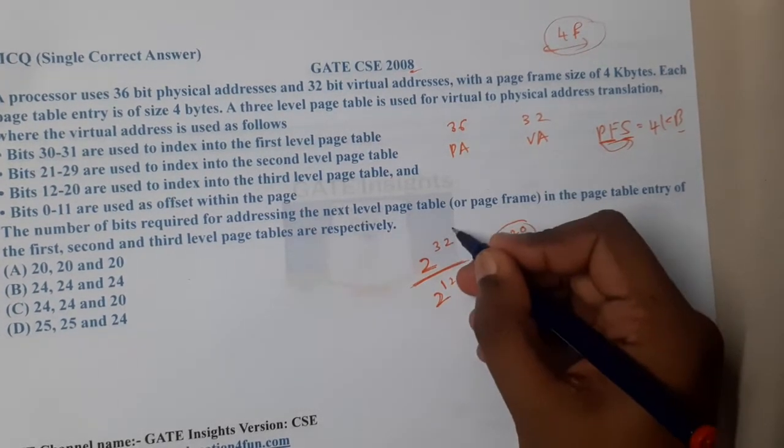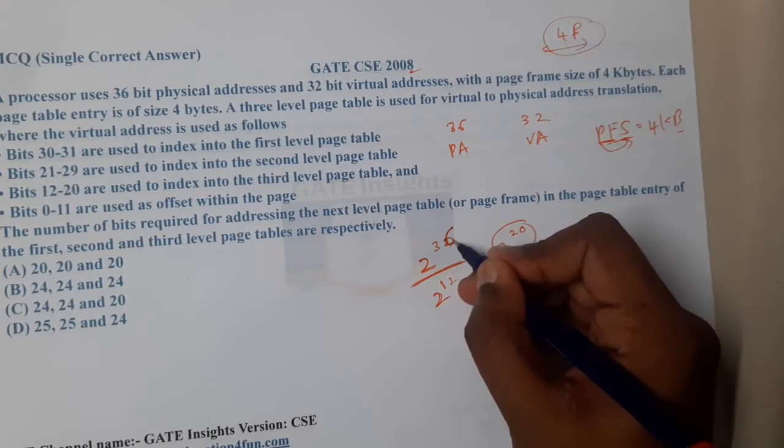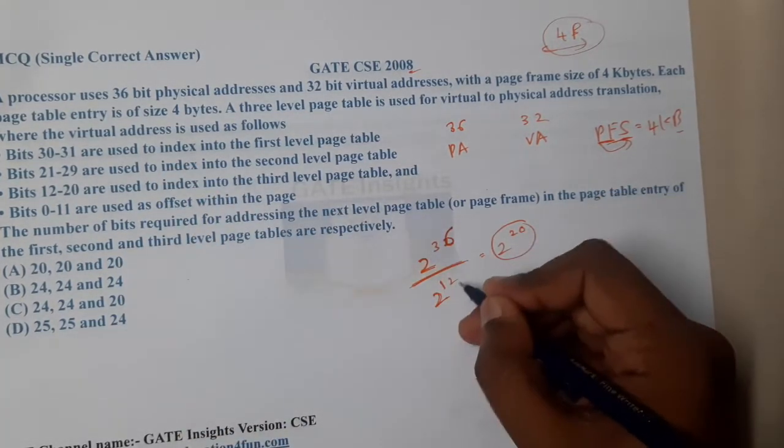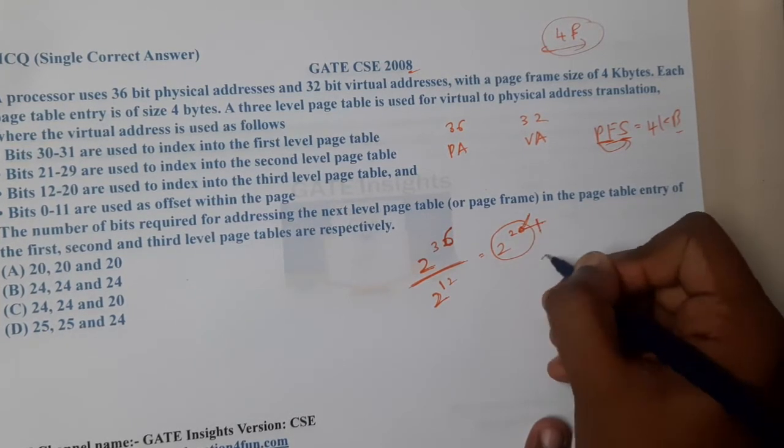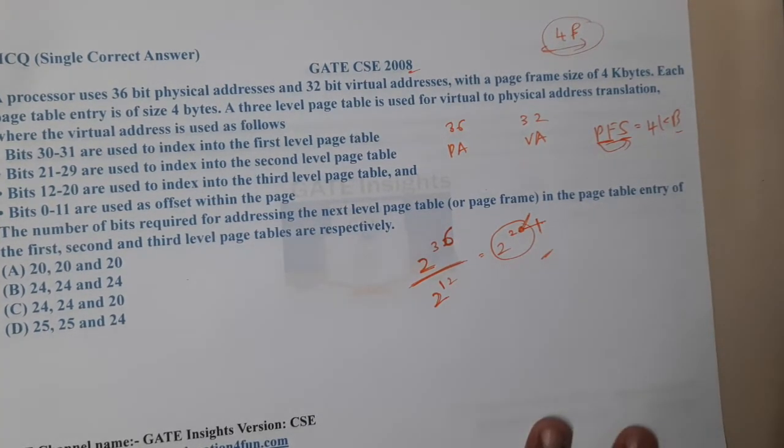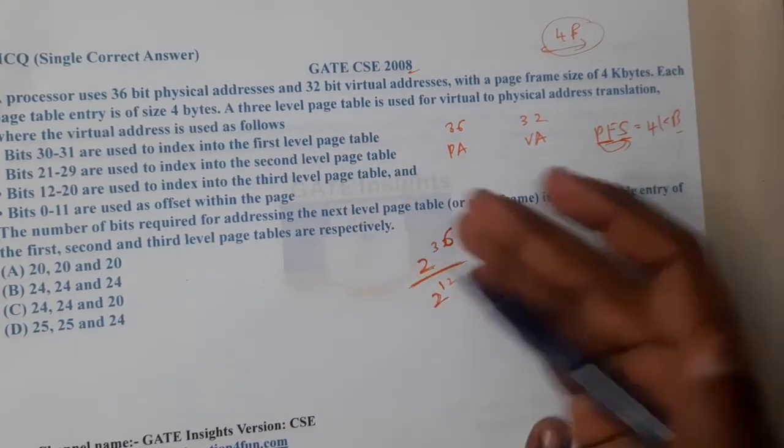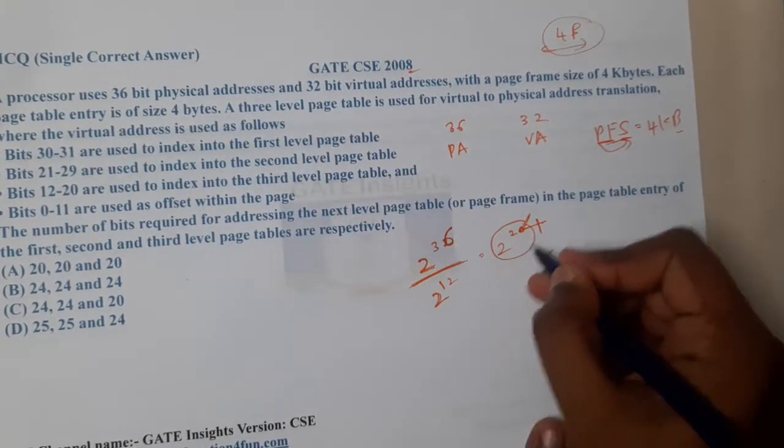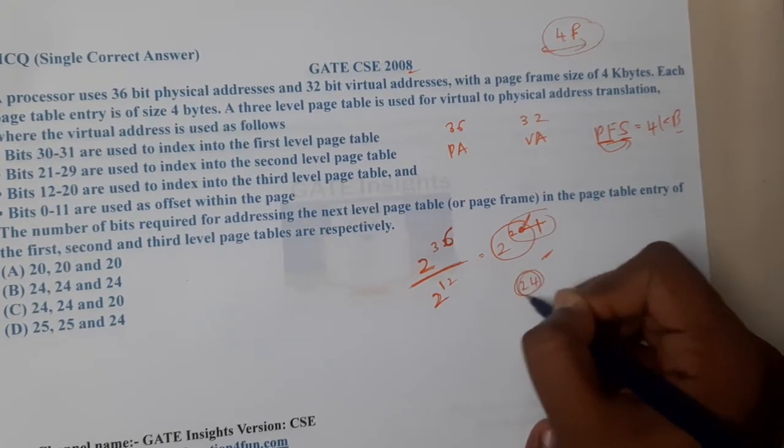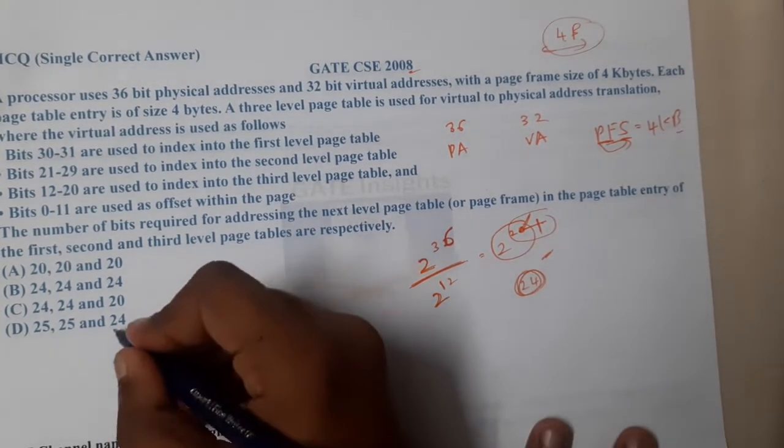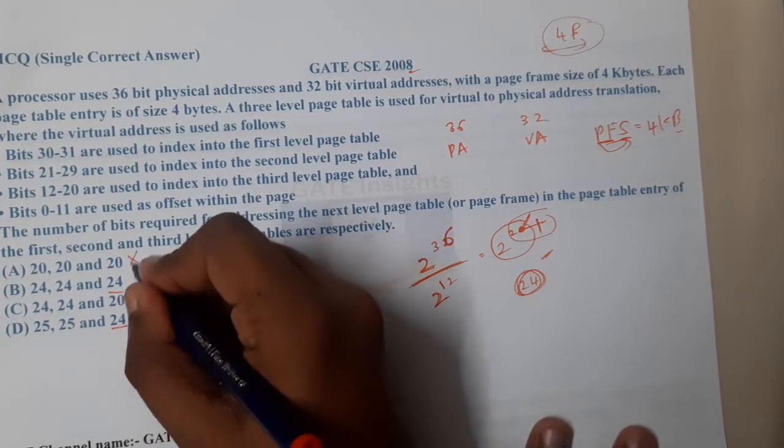Okay, sorry, I think I need to take here 36 because our size is 36, so we will end up with 24 here. So with this, what we can conclude? The last page table will size 24, so 24 should be the answer for the last one. So with that, I think we can eliminate these two options.